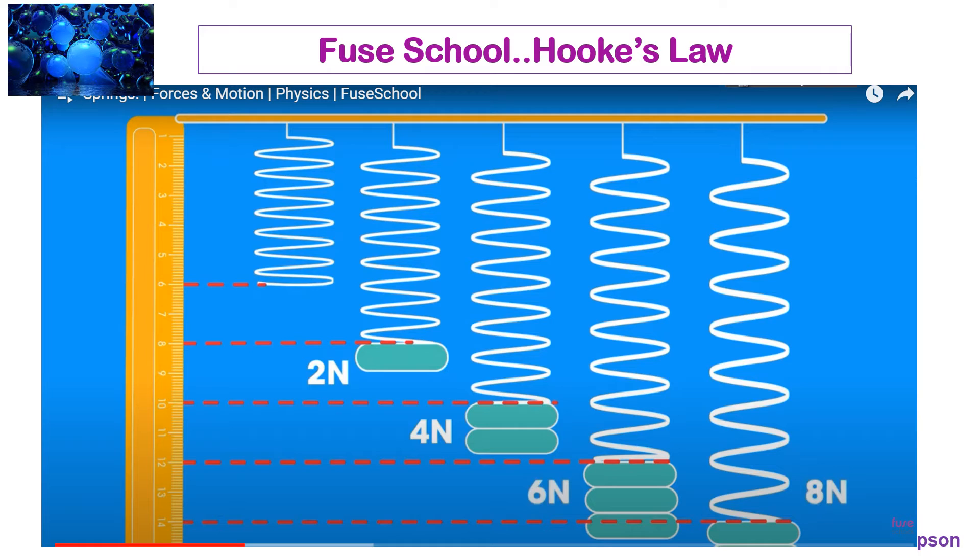So, you see the spring on the left has no force on it, no weight hanging it down. It is 6 centimeters long. Adding 2 newtons stretches it to 8, so it's gone up by 2 centimeters. And then 4 newtons has gone up to 10, so it's stretched by 4, and so on. So, every time you add a 2 newton mass on, it goes up by 2 centimeters, or every newton is 1 centimeter. This is a direct proportional relationship. It goes up in direct proportional.